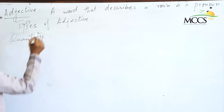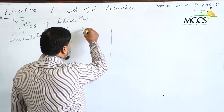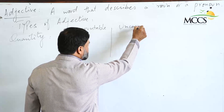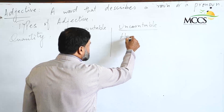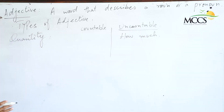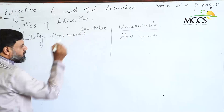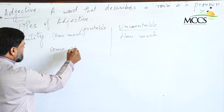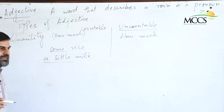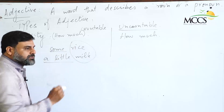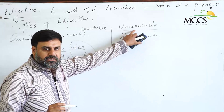Next we have the adjective of quantity. Students, if you remember when we discussed nouns, we discussed two types — countable and uncountable. When we talk about uncountable nouns, we use the question 'how much,' and that tells us about their quantity. For example: some rice, a little milk. You can see that these words indicate the quantity of those uncountable nouns. So remember, for adjectives of quantity, the nouns used must be uncountable nouns.